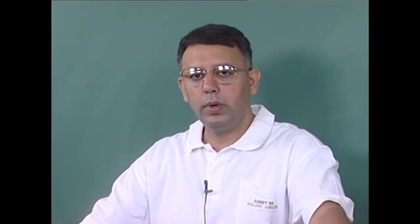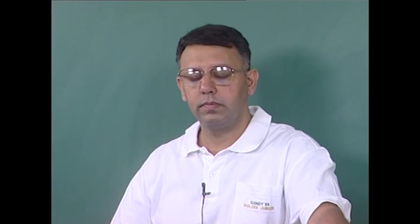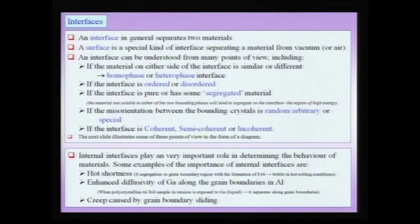After talking about surfaces in considerable detail, we now take up the topic of interfaces. An interface in general can be between a solid and a liquid, solid and a vapor, or between a solid and a solid. A surface is nothing but a special case of an interface between a solid or a liquid and the vapor or gas phase. Interfaces in general separate two materials, and surfaces of various kinds can be understood as special cases of interfaces.